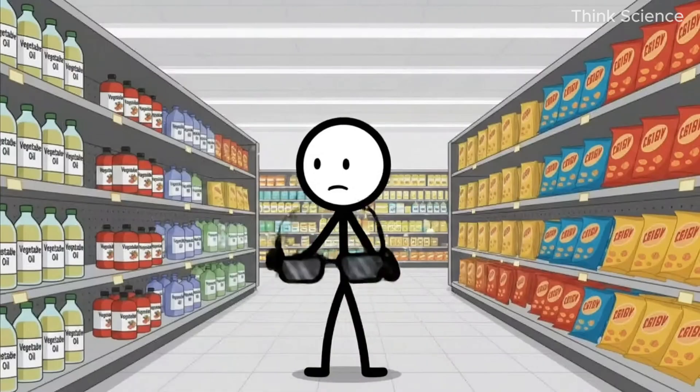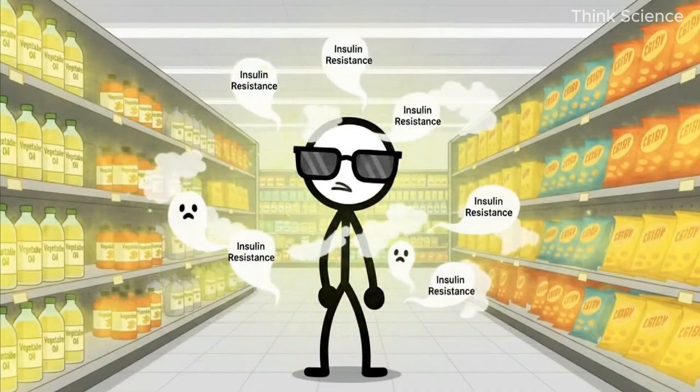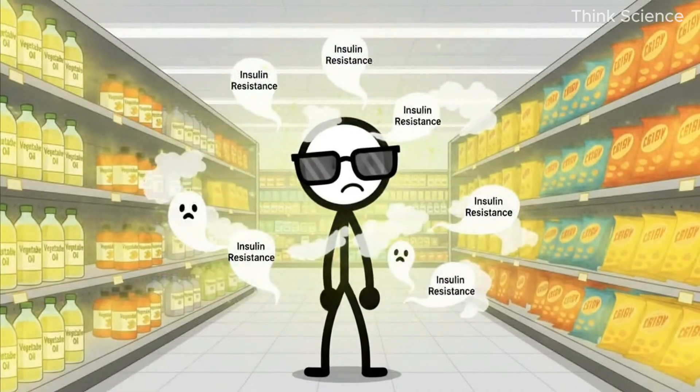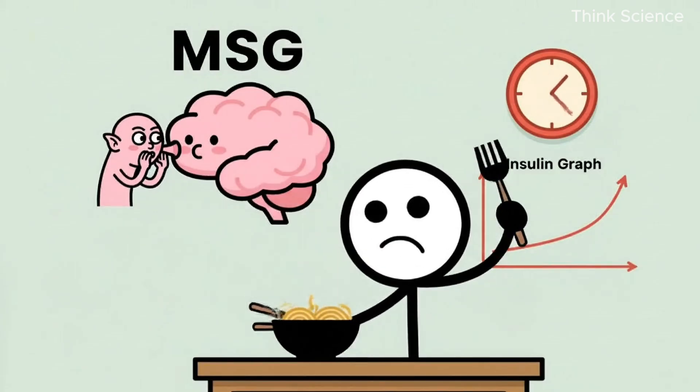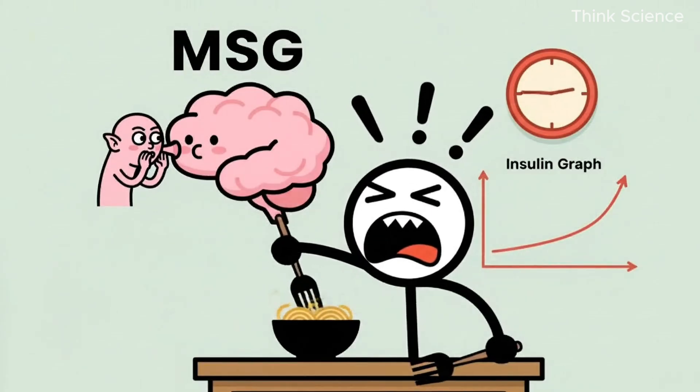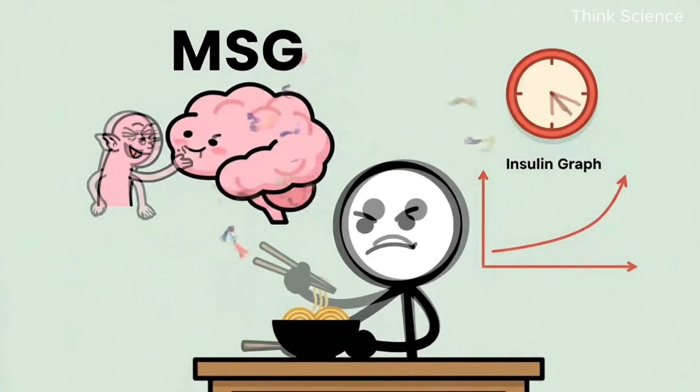There's more. Seed oils quietly push insulin resistance. They're in fast food, bottled dressings, restaurant meals, packaged snacks. MSG also tricks the brain, making you hungrier an hour later. It doesn't just make food taste good. It increases cravings and pushes you to eat more often, keeping insulin elevated.